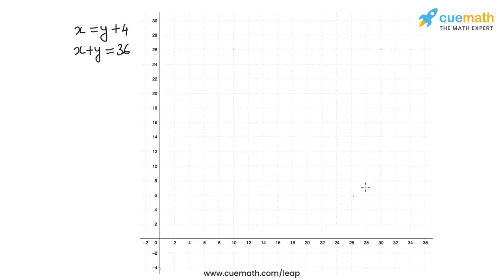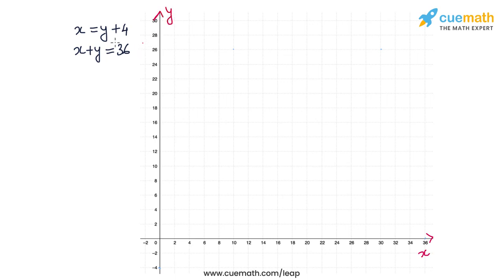Here are the axes on which I will graph the two equations. The horizontal axis represents x, which is the length of the rectangle, and the vertical axis represents y, which is the breadth. The two equations are x = y + 4 and x + y = 36.